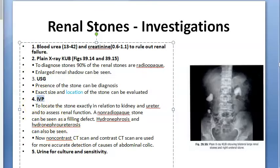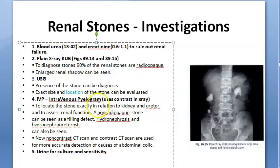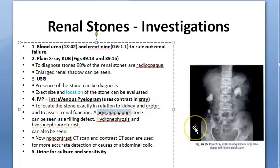IVP — Intravenous Pyelogram — is also an X-ray technique but uses contrast material. You locate the stone exactly in relation to the kidney and ureter, and also assess renal function since the kidney tries to clear the contrast. A non-radio-opaque stone can be seen as a filling defect. Hydronephrosis and hydroureteronephrosis can also be seen.